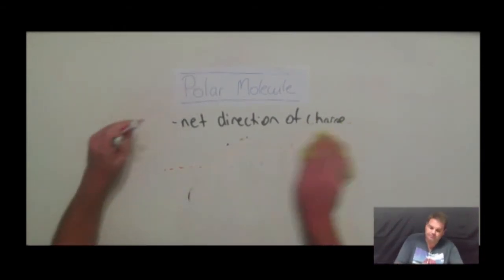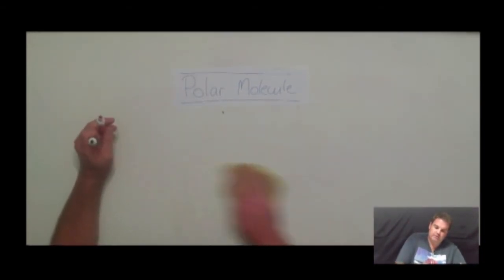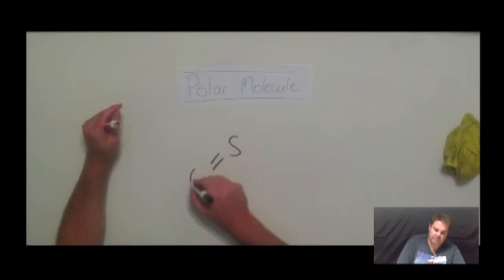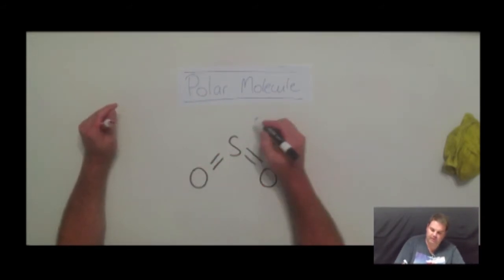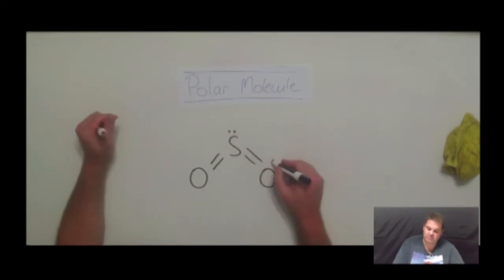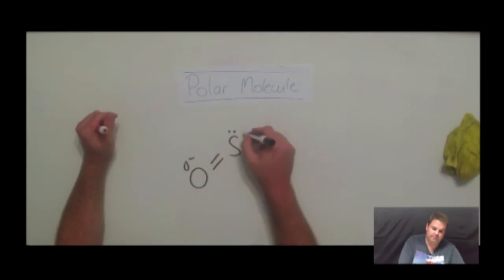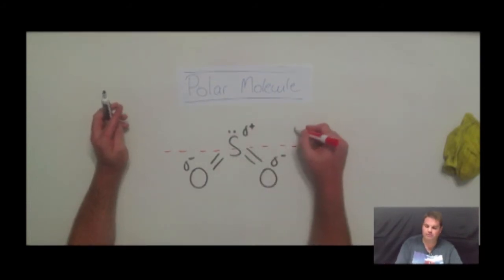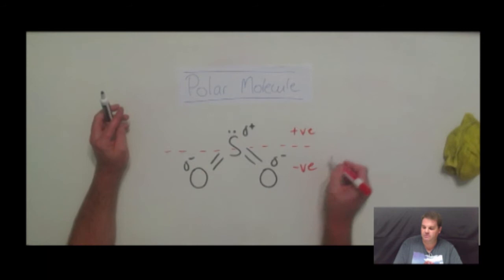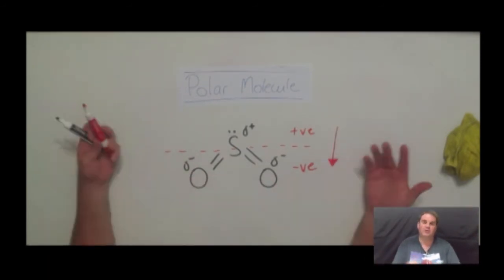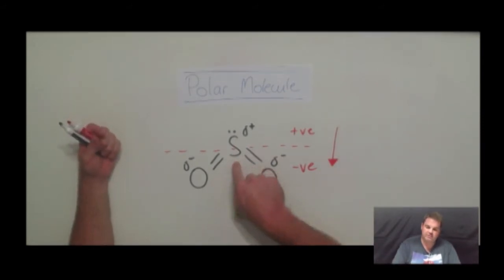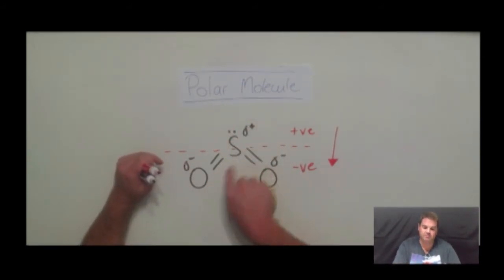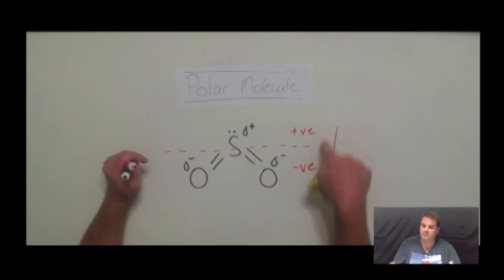Another molecule that has a net direction of charge is sulfur dioxide. Again we've got a lone pair of electrons at the top. Oxygen is more electronegative, so it draws electron density to itself — the sulfur is delta positive. The easiest way to work it out is to put a line through the middle of your molecule: if you've got all the positives on one side and the negatives on the other, you've got a net direction of charge, so we have a polar molecule. Notice that we have polar bonds within here — there's a negative to positive between the sulfur and the oxygen — and overall this molecule is polar.